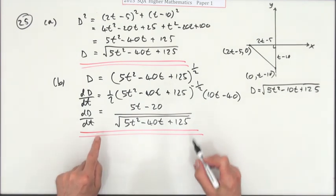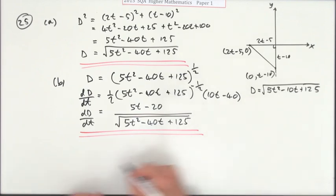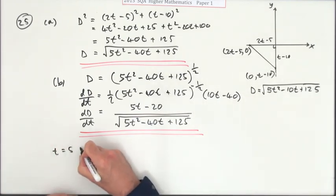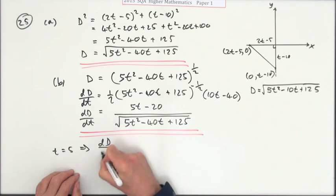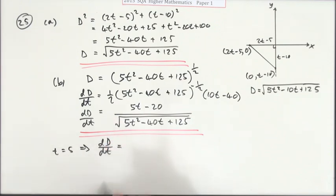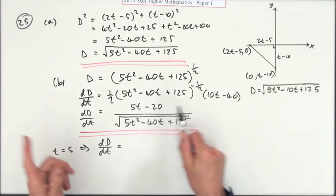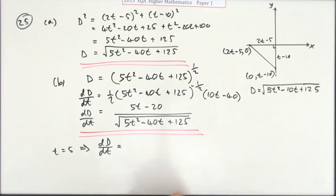Now I just need to figure out what's the value of this when t is 5. So t equals 5 means that this derivative will be—it's not the actual value, it's just really whether it's positive or negative. And you can see straight away: five fives are 25 minus 20 is positive, the bottom part is positive, so it's positive overall.